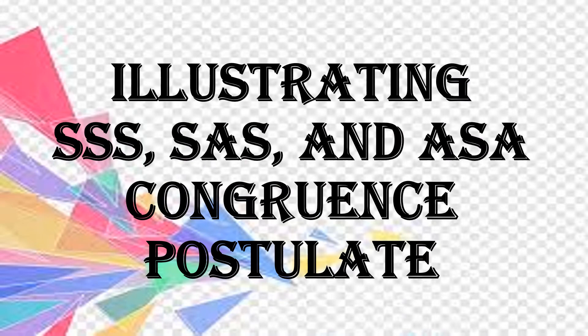So in this case, we're just going to illustrate the SSS, SAS, and the ASA congruence postulate. Meaning, we're not going to use yet the two-column proof — the first column for the statement and the second column for the reason. So we're just going to illustrate how we can say that two triangles satisfy the SSS, SAS, and ASA congruence postulate.